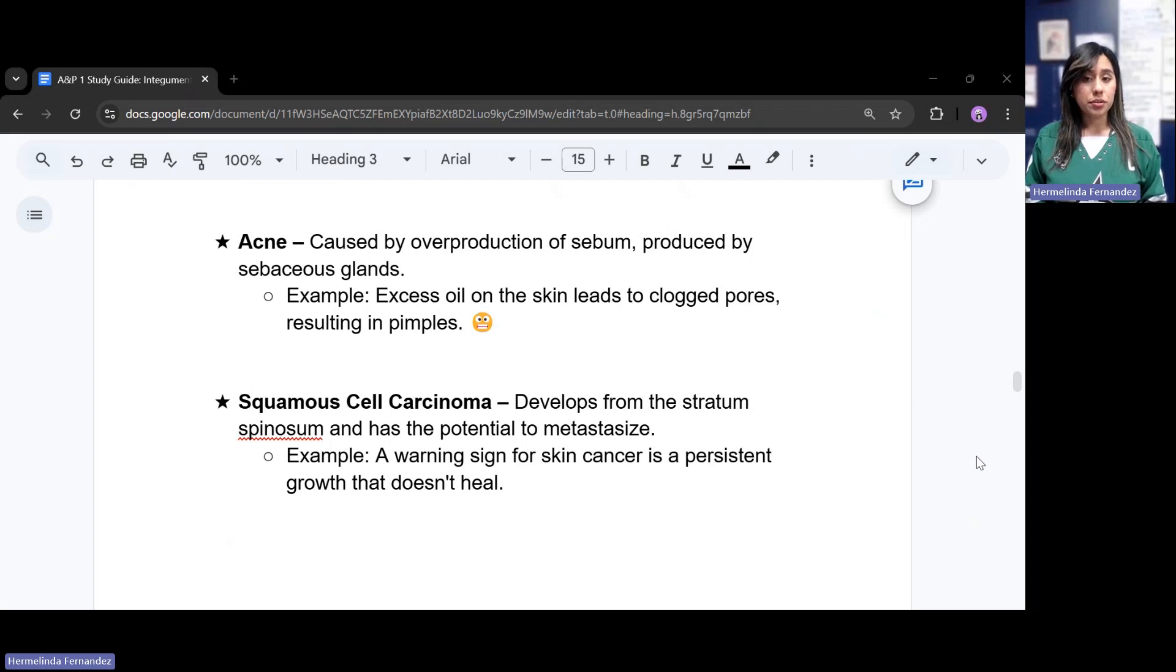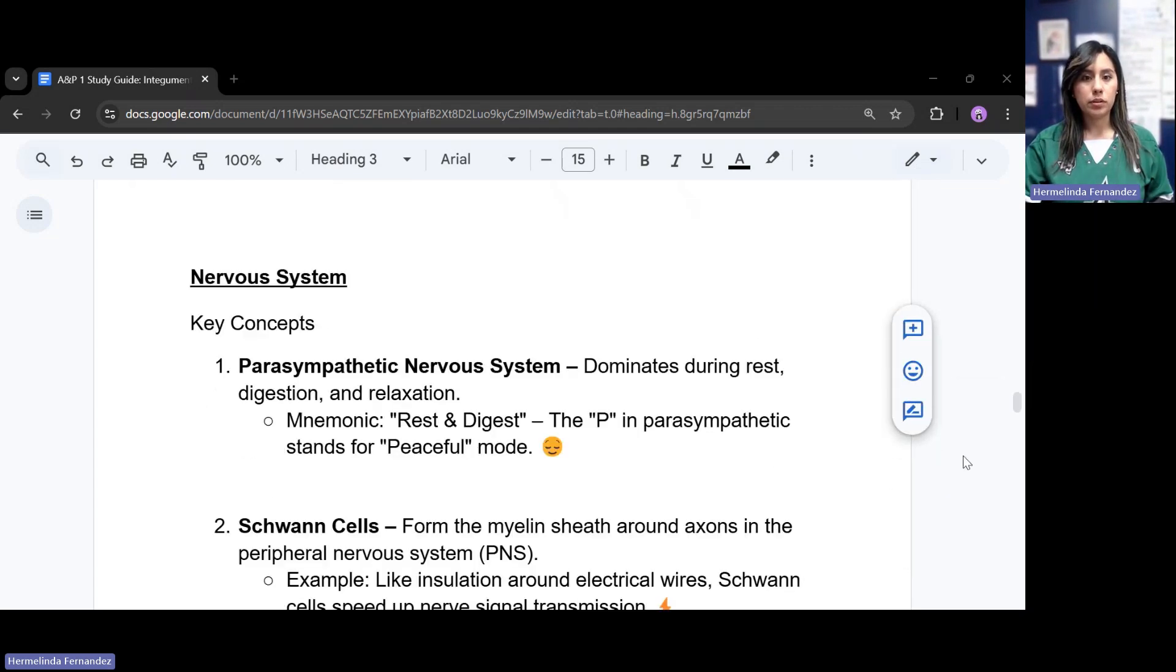Squamous cell carcinoma develops from the stratum spinosum and this has a potential to metastasize. An example of this would be a warning sign of skin cancer would be persistent growth that doesn't heal. If your patient comes in and they're saying, hey, you know, this is just not getting any better, that's a screening that you would have to look for.